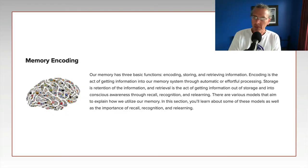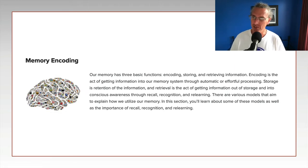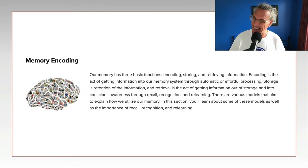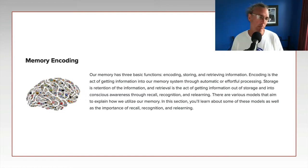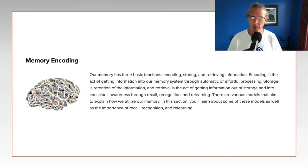We talk about human memory as having these three basic functions: encoding, storage, and retrieval, and all three of these things have to work well for us to remember something. We have to encode it well, we have to store it, and then we have to eventually be able to retrieve it. If anything goes wrong at any of these three stages, our ability to remember will be impaired. We're really talking about conscious, declarative memory here.